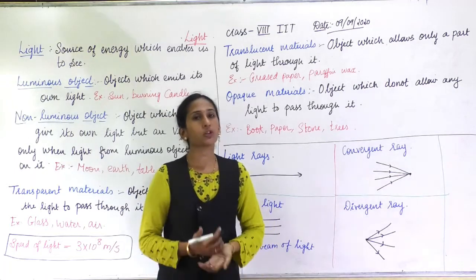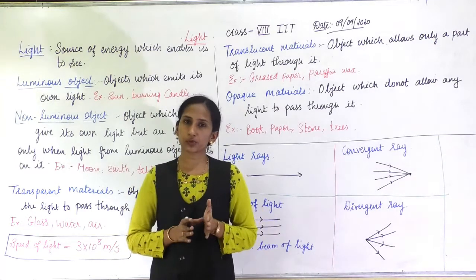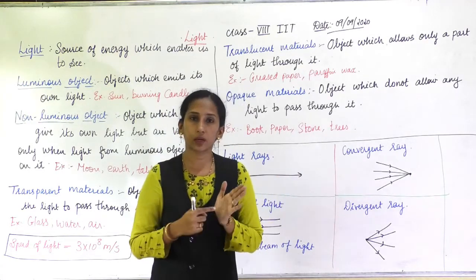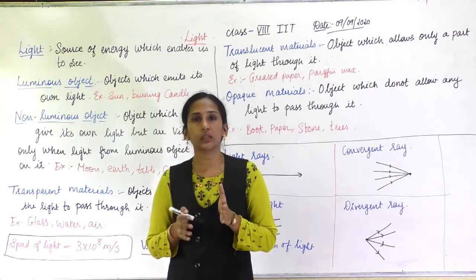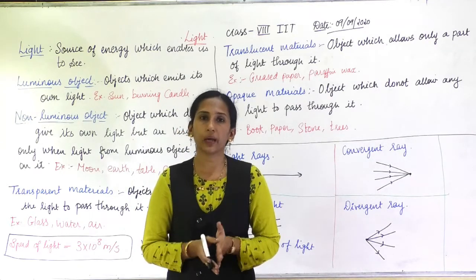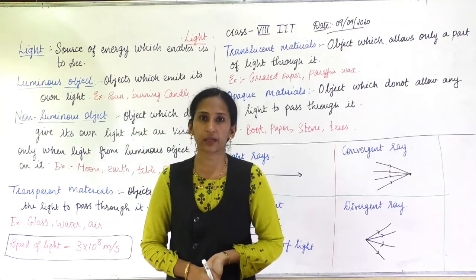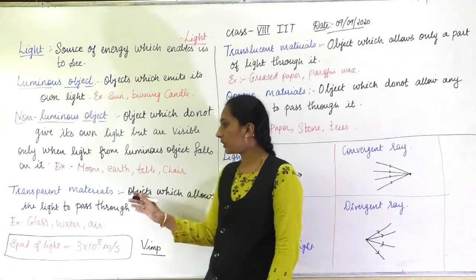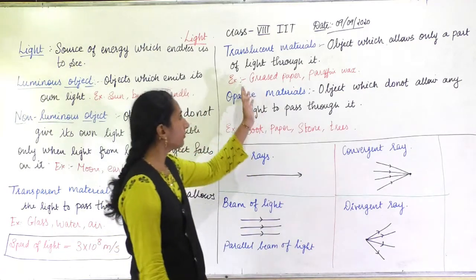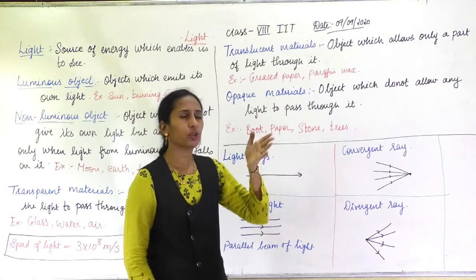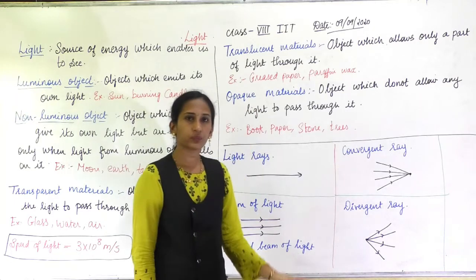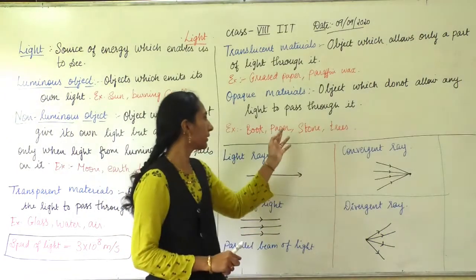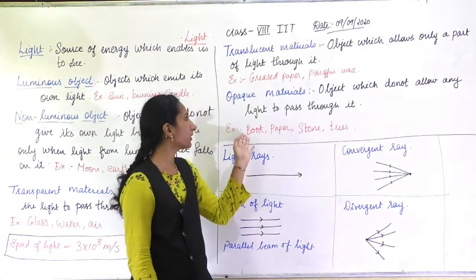The third type is opaque material. Opaque materials do not allow any light to pass through them — for example, your hand: you cannot see anything behind it. Objects that block all light are called opaque objects, and this property is called opaqueness. The property of allowing all light through is called transparency, and the property of allowing only partial light is called translucency. Examples of opaque materials are books, paper, stones, and trees.